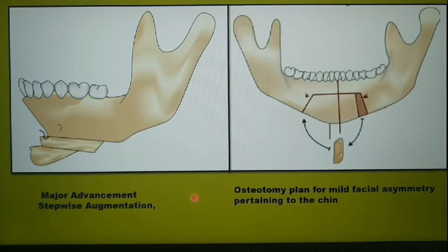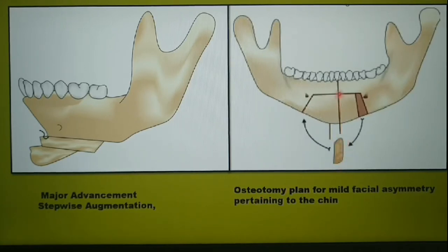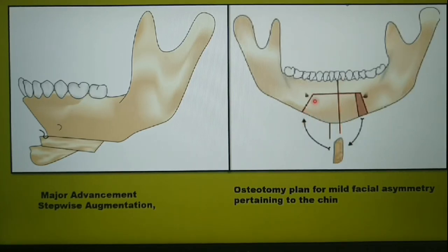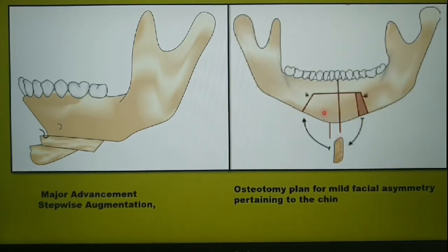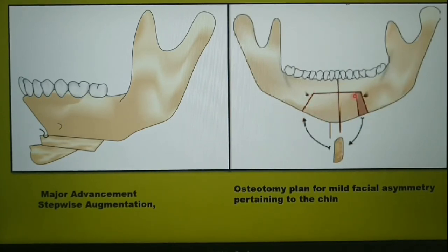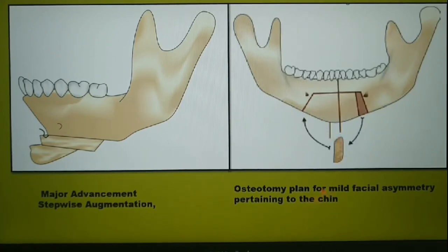Genioplasty can also be performed to correct facial asymmetry. For example, if the chin midline doesn't coincide with the facial midline, you perform a modified osteotomy and remove a bone graft — for example, from the left side — then move the osteotomized segment towards the left and fit the bone graft back into the right side. This is an osteotomy plan for mild facial asymmetry pertaining to the chin.